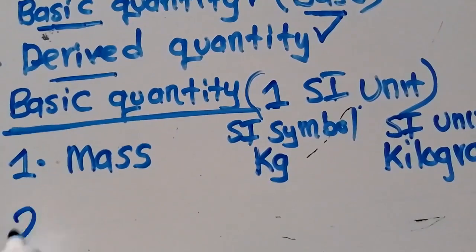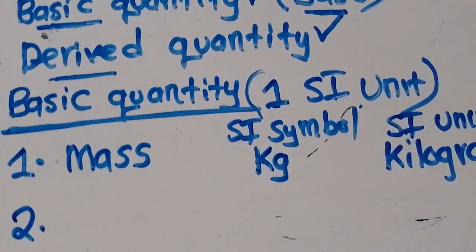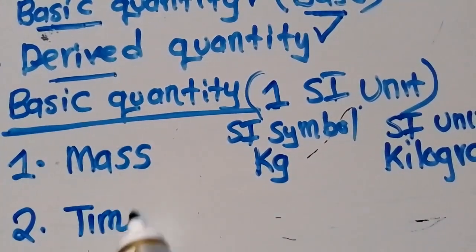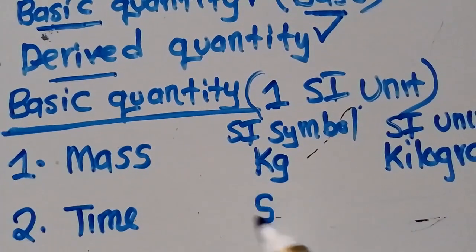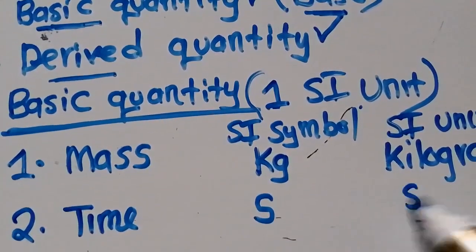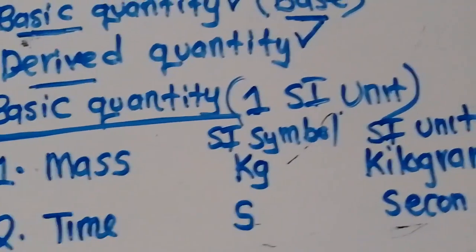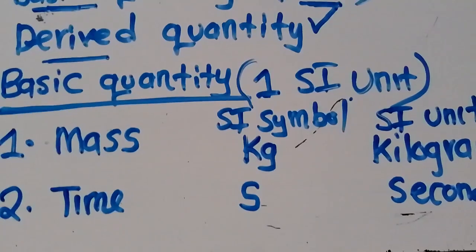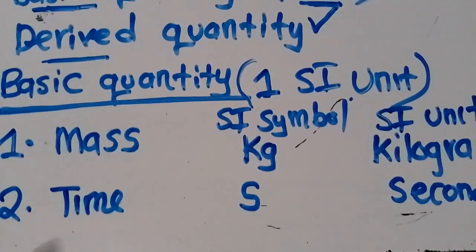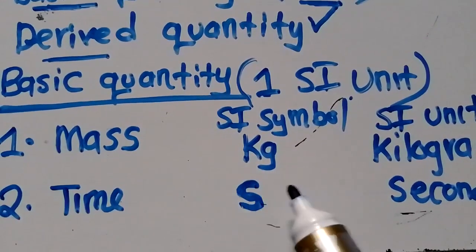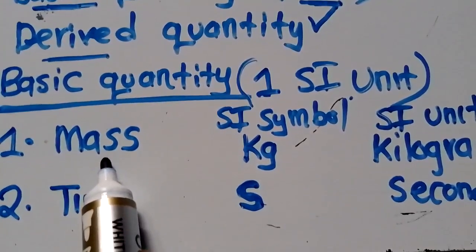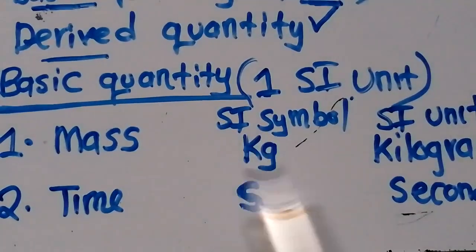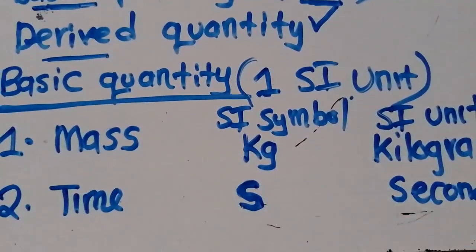The second basic quantity is time. Time is a basic quantity. The SI symbol for time is small letter 's', and the SI unit is second. Time is a basic quantity because it only has one SI unit, which is the second. Mass is also a basic quantity because it only has one SI unit, which is the kilogram.